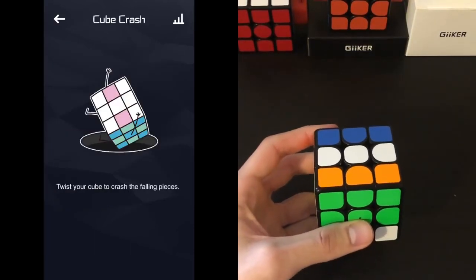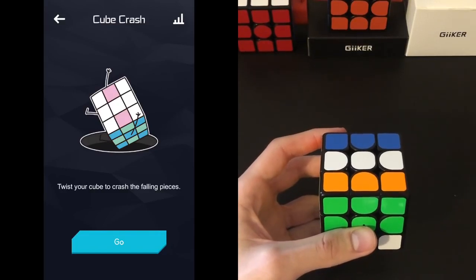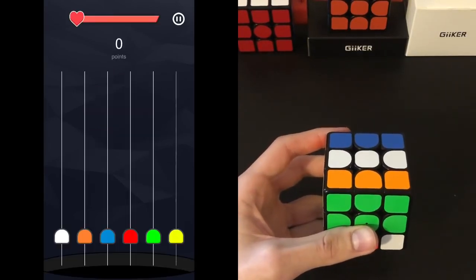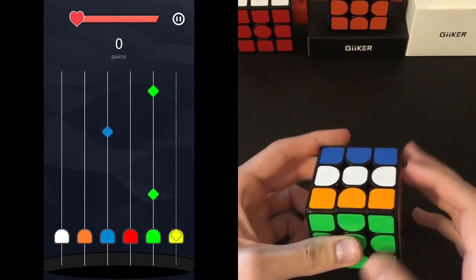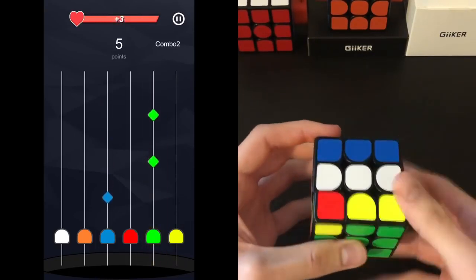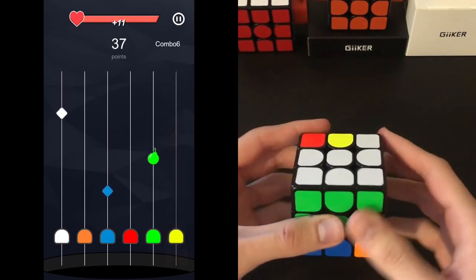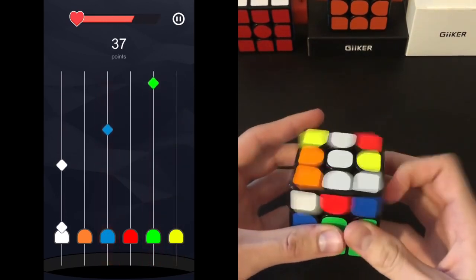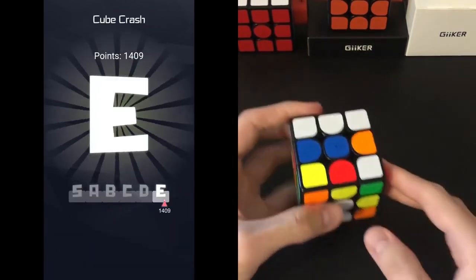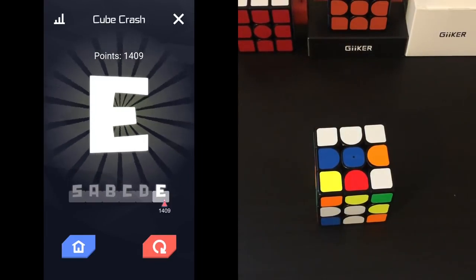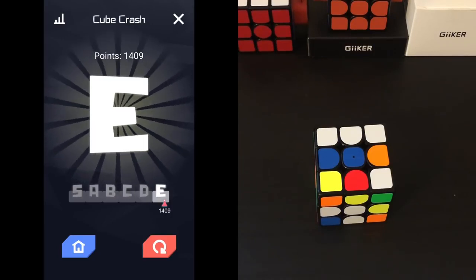So moving on to Cube Crash, this game is kind of like Guitar Hero and Cubing combined. I think this would be the most helpful with getting familiar with your color scheme because as it gets faster and faster, you're sort of forced to make turns without having to look back at the cube. So here you make the turns as the little note sort of gets onto the actual tab. It's kind of like Guitar Hero. And then if you get the moves incorrect or if you miss things, then the game is over. And then you get some sort of score. I'm not exactly sure how the scoring works or what S-A-B-C-D-E, how that scoring system works.